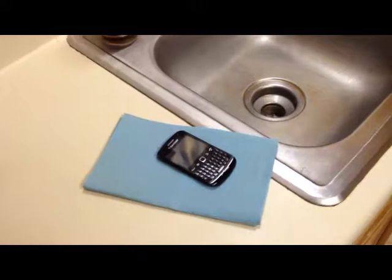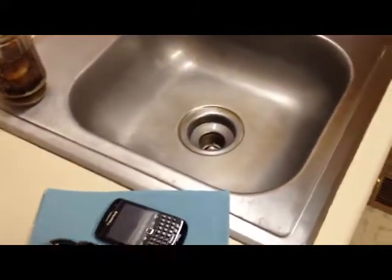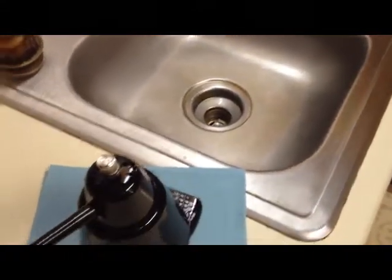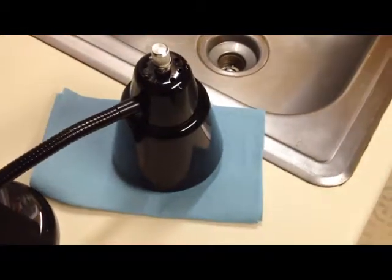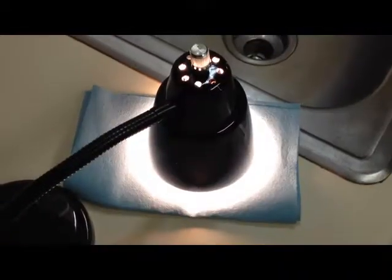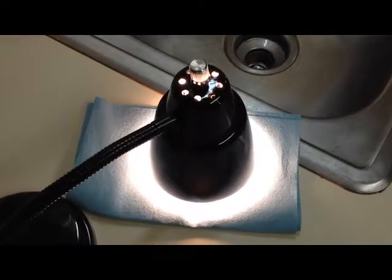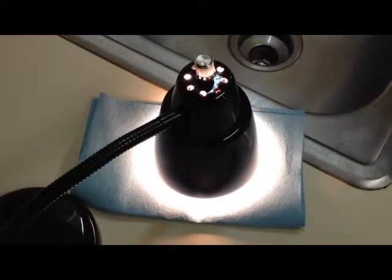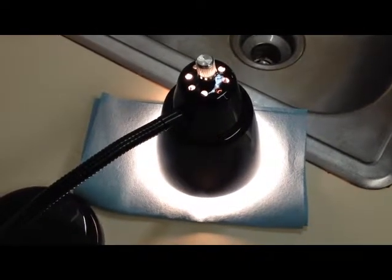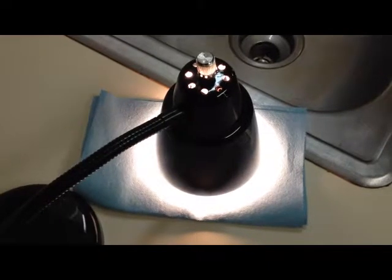When you've removed as much of the fluid as you possibly can through the slinging process, now place the phone under a 60-watt incandescent light bulb. Make sure that the bulb's surface is no closer than about one-half inch or one centimeter from the surface of the phone. Expose the phone to the lamp for 15 minutes.